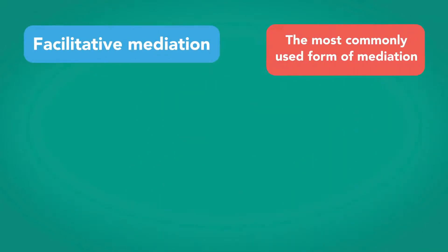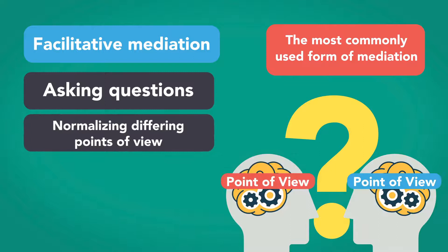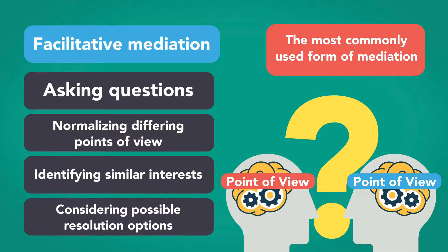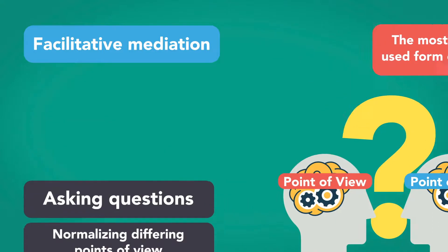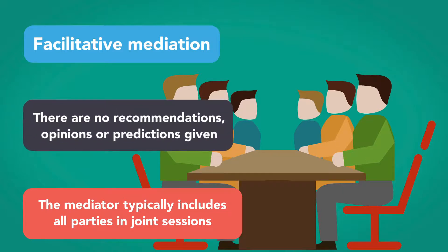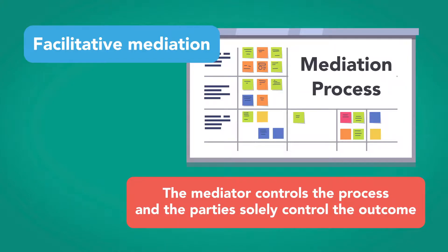Facilitative mediation is the most commonly used form of mediation. It involves asking questions, normalizing the differing points of view, identifying similar interests, and helping the parties consider possible resolution options. The mediator typically includes all parties in joint sessions, so everyone can hear all points of view. There are no recommendations, opinions, or predictions given. With facilitative mediation, the mediator controls the process and the parties solely control the outcome.